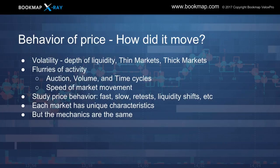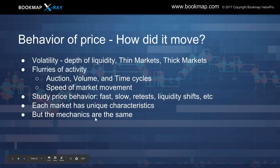Look for flurries of activity within the auction or volume, or within time cycles like the S&P cash open or the NASDAQ. Start to understand the speed of the markets — how quickly did something occur, or was it a slow movement? It's going to give a lot of insight to some of these basic mechanics. Each market has its own unique characteristics, but these basic mechanics are all the same.